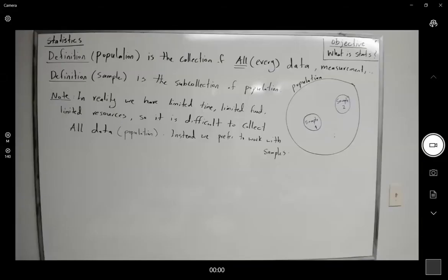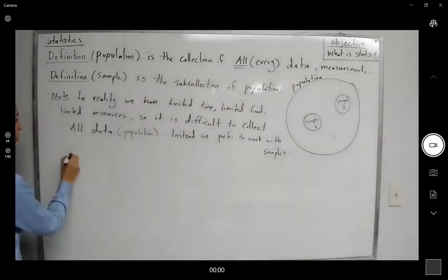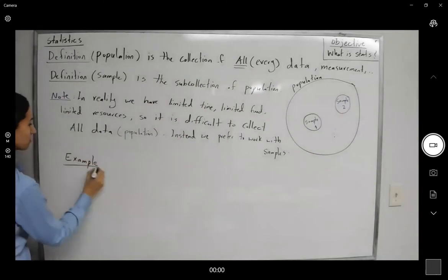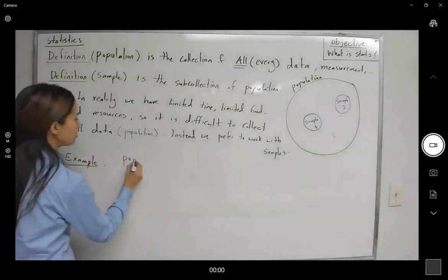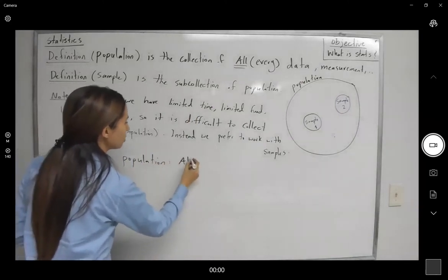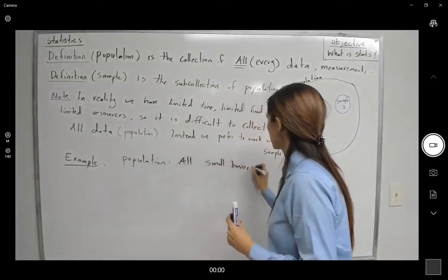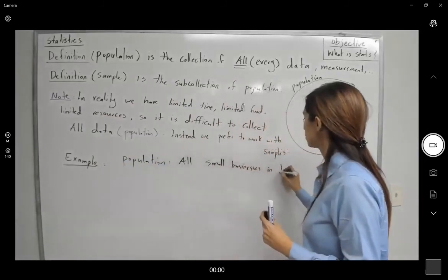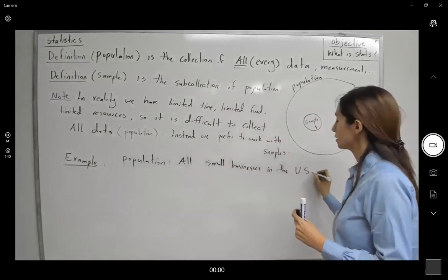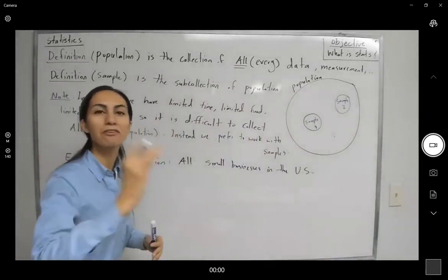So in this example, the population is actually all small businesses in the United States, in the U.S.